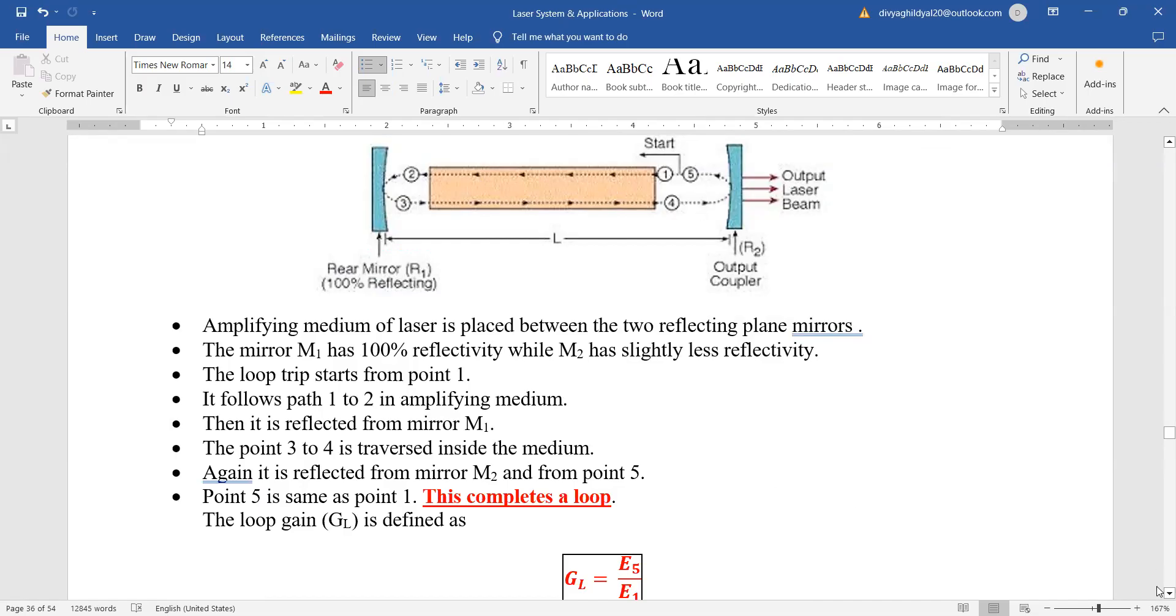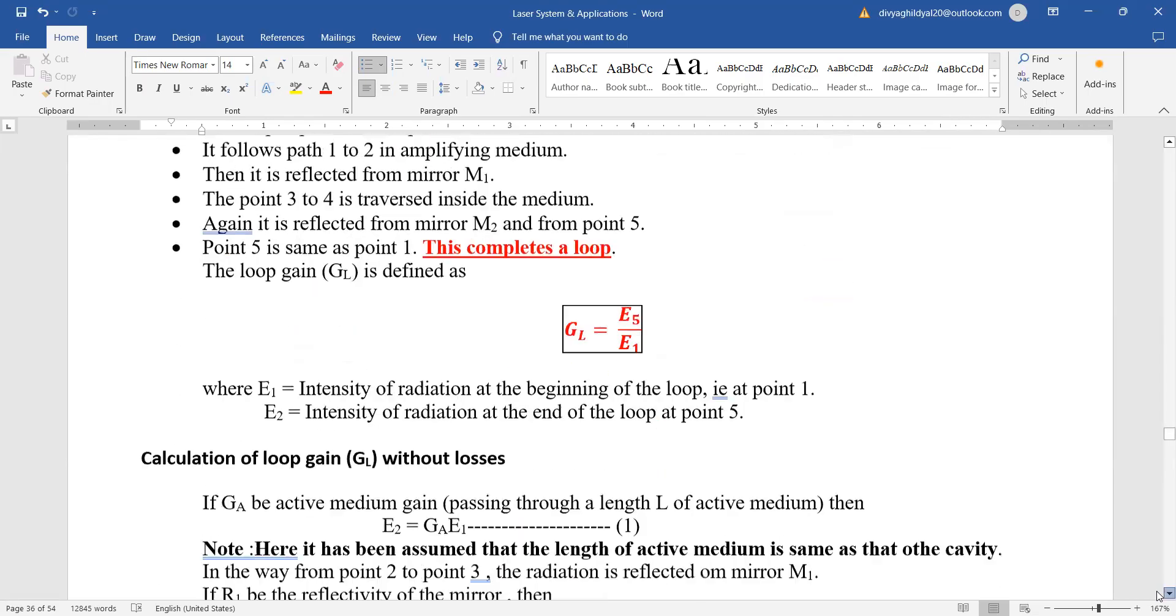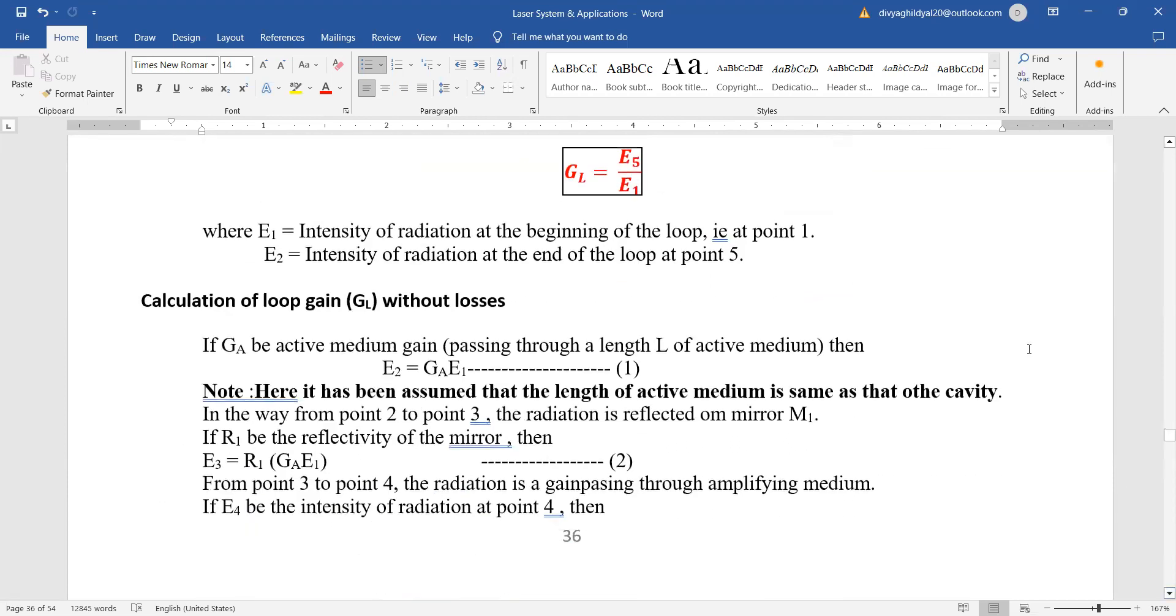Loop gain, again gain means output upon input. What had we in input? Point one. What have we got in output? Point five. Their ratio gives us gain. That means E5 upon E1, the intensity of radiation at the beginning and the intensity at the output.